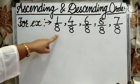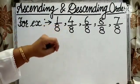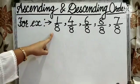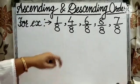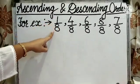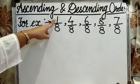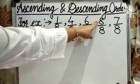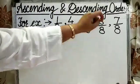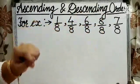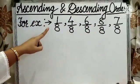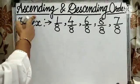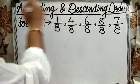It means these all fractions belong to the same family, or we can say that these all fractions are like fractions. So the fraction with the smallest numerator will be considered as the smallest fraction and the fraction with the greatest numerator will be considered as the greatest fraction. Now we need to arrange these fractions in ascending as well as in descending order.